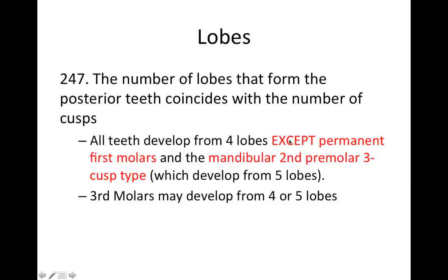The test isn't generally going to ask about the general rules — oftentimes they'll ask about the exceptions. So here's an exception to the four-lobe rule: permanent mandibular first molars and mandibular second premolar three-cusp types develop from five lobes. The mandibular first molar has three buccal cusps, three buccal lobes and two lingual lobes. The upper molar has two lingual cusps and two buccal cusps, but on the lingual it also has the cusp of Carabelli — use that to remind yourself there are three lobes on the lingual of the maxillary first molar.